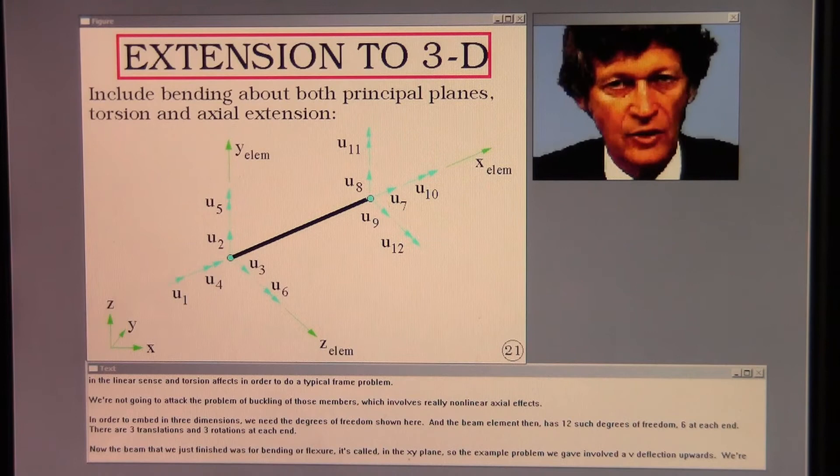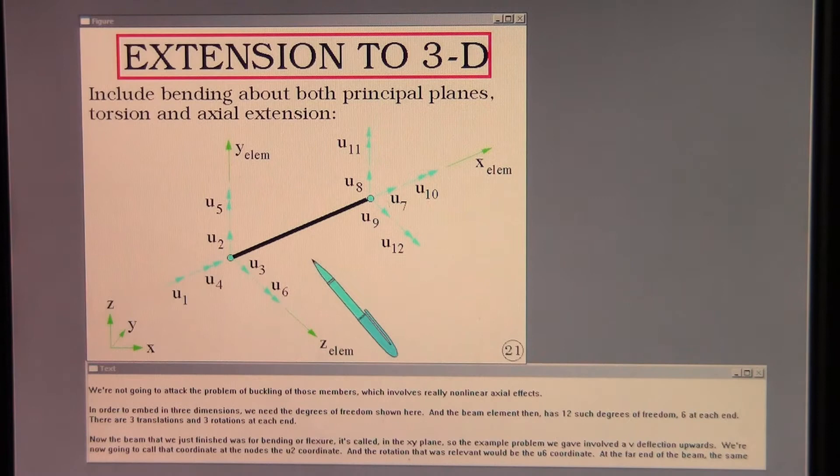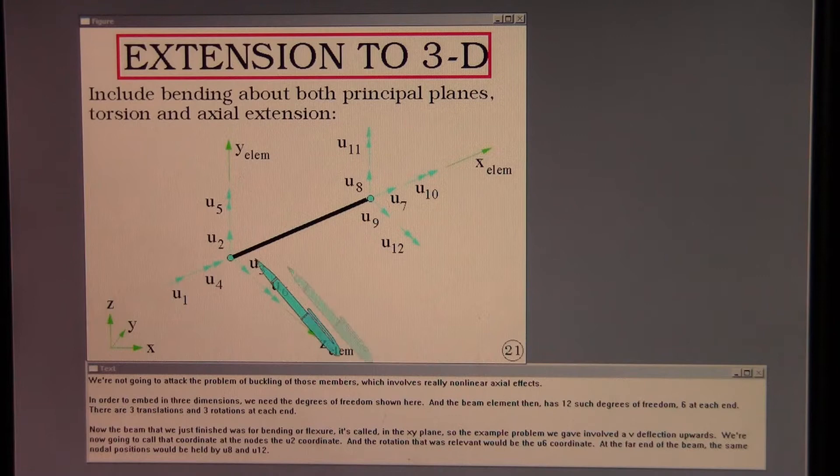We're not going to attack the problem of buckling of those members, which involves really non-linear axial effects. In order to embed in three dimensions, we need the degrees of freedom shown here. And a beam element then has 12 such degrees of freedom, six at each end.